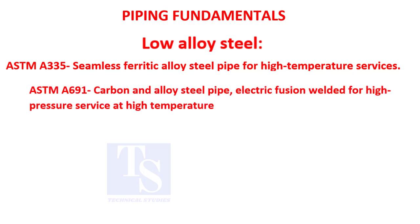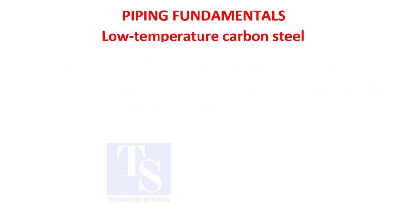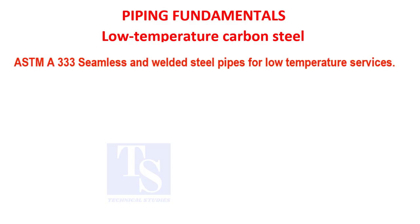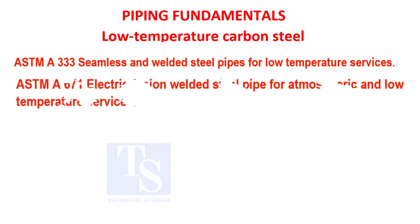ASTM A-691: carbon and alloy steel pipe, electric fusion welded, for high pressure service at high temperature. ASTM A-333: seamless and welded steel pipe for low temperature services. ASTM A-671: electric fusion welded steel pipe for atmospheric and low temperature services. Available sizes are larger than 16 inches.